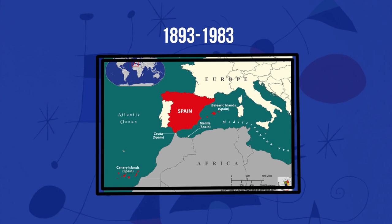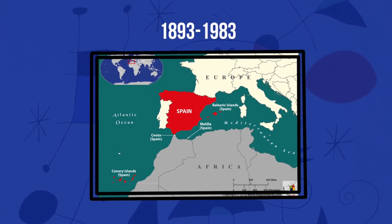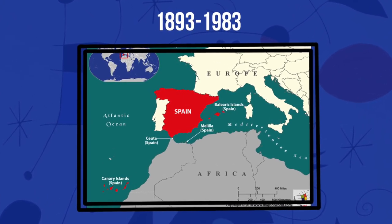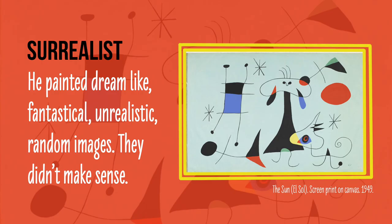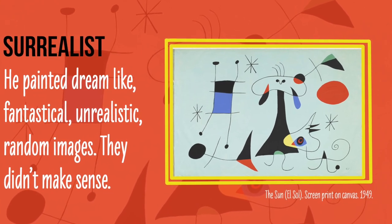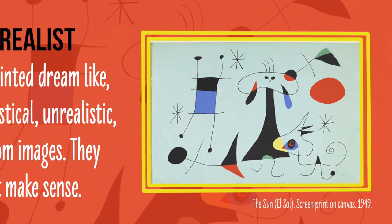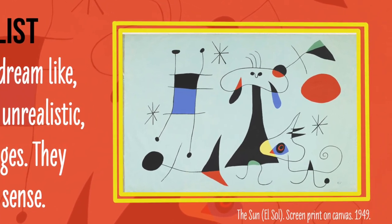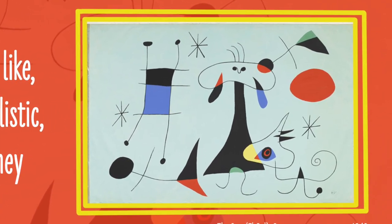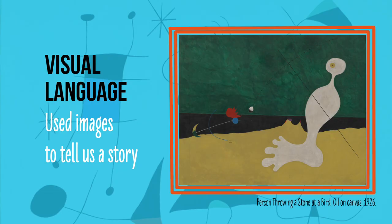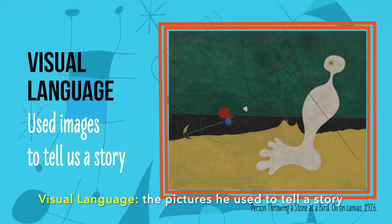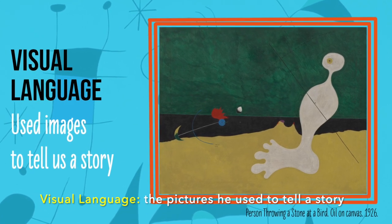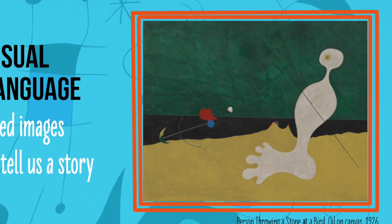He was born in 1893 in Barcelona, Spain, or España. Some of his artwork was considered surrealist. He painted dream-like images that didn't really make sense. His visual language, or the pictures he used to tell us a story, were unrealistic and random, but they represented something.